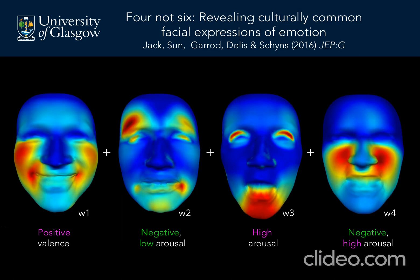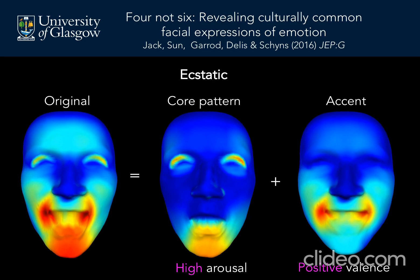We found that four, not six, culturally common latent expressive patterns, each of which are associated with valence and/or arousal. For example, the leftmost expressive pattern primarily subtends positive emotions such as happy, pride and delighted, whereas the rightmost pattern primarily subtends negative high arousal emotions such as disgust, rage and hate. Therefore, each of the 60 facial expressions of emotion can be expressed as a weighted combination of these latent expressive patterns. For example, ecstatic shown on the left primarily comprises a combination of the wide eyes and mouth expressive pattern plus a specific accent from the smiling pattern. So we found that four, not six, culturally common latent expressive patterns combine in an algebraic way to generate complex facial expressions.